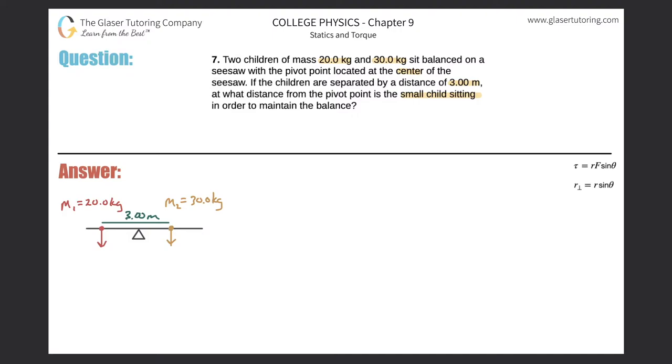All right, so first this object is in balance and therefore we know that the sum of the torques have to be equal to zero, right, since it's in equilibrium. So I'm just going to write that down: sum of the torques is equal to zero.